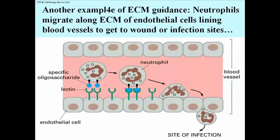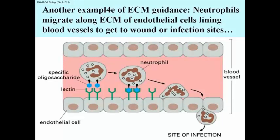Here's another example of extracellular matrix guidance of cell movements. This one occurs in the blood. Neutrophils are white blood cells that migrate between the endothelial cells lining blood vessels to move towards a wound or an infection site. These neutrophils have specific oligosaccharides in their glycoproteins on their surfaces.